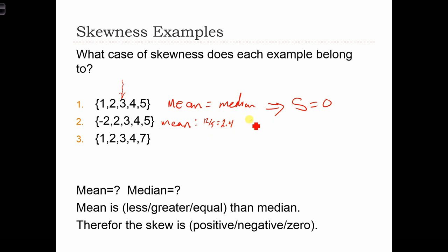This is going to be less than the median, which is equal to 3. When the mean is less than the median, it means we have negative skew. So S is going to be less than 0.